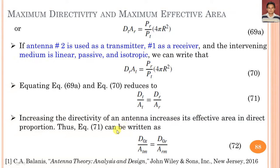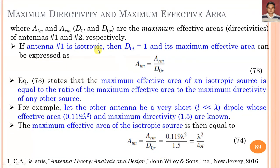This is an important relation: increasing the directivity of an antenna increases its effective area in direct proportion. In the maximum case: dt/atm = dr/arm, where atm and arm are the maximum effective areas and dt and dr are the maximum directivities of antennas 1 and 2. If antenna 1 is an isotropic antenna radiating equally in all directions, its maximum directivity equals 1, giving atm = arm / dor. The maximum effective area of the isotropic source equals the ratio of maximum effective area to maximum directivity of any other source.